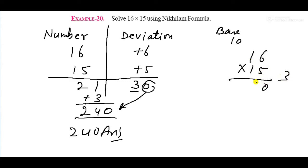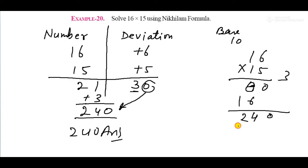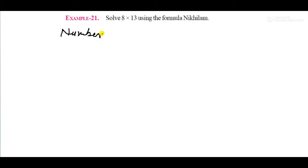Verify by direct multiplication: 15 times 16. 5 times 6 is 30, carry 3. 5 times 1 is 5 plus 3 equals 8. Then 1 times 6 is 6 and 1 times 1 is 1. Result is 240. Our answer is correct.